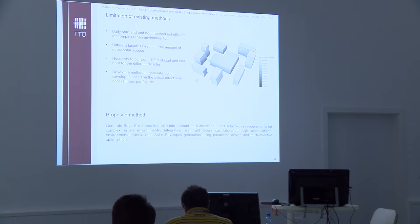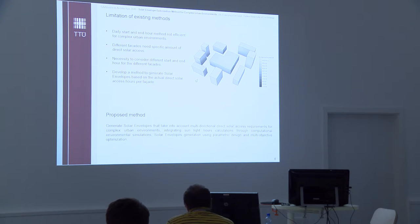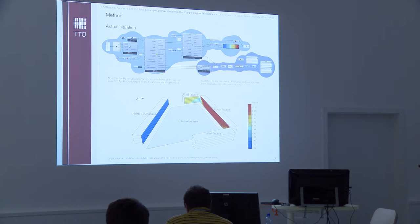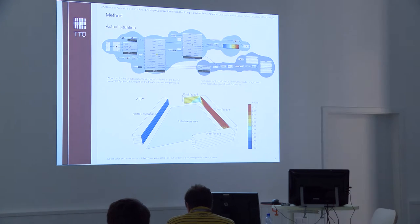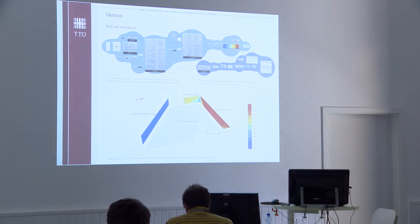The proposed method actually does this — it considers the actual amount of direct solar access hours and integrates environmental simulation into the computational design environment, along with parametric design of the solar envelope and multi-objective optimization. As a first step, one block was isolated to conduct this research, and the area in between is where the solar envelope has to be generated. On this block, direct solar access was calculated by simulation software, and for every node of the different facades the minimum, maximum, and average sunlight hours were calculated.